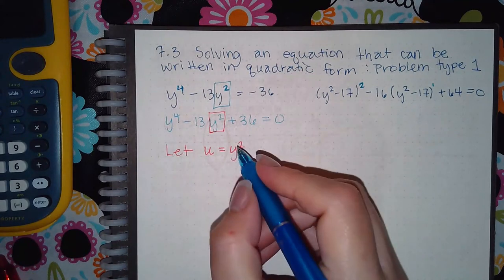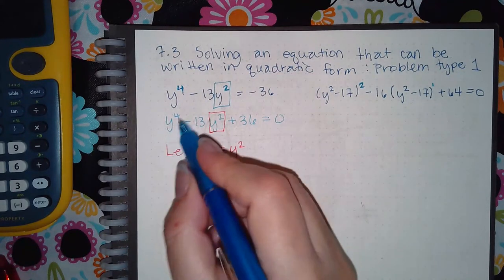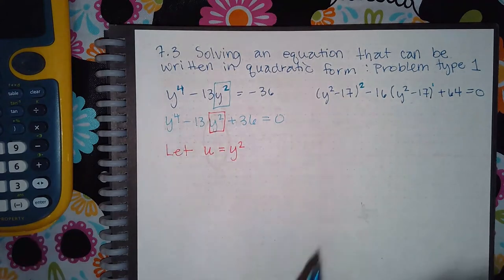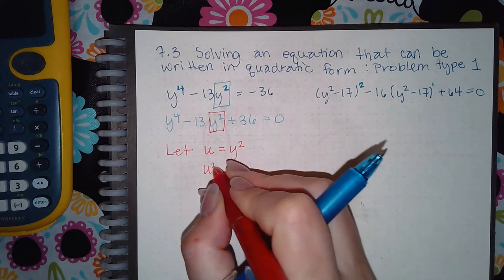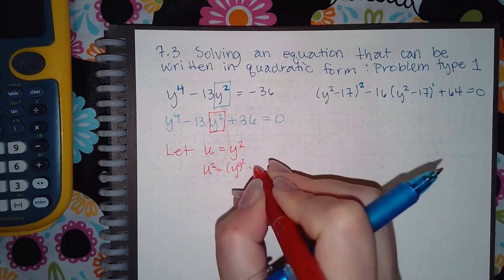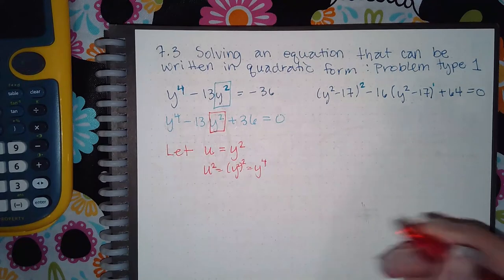So what that means then, is that this guy is u squared. Because if I square this side, and I square this side, I get y to the fourth.